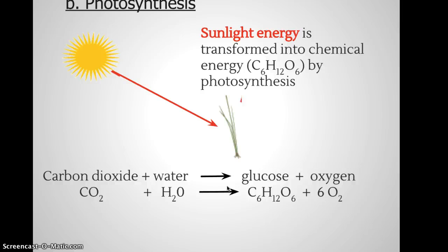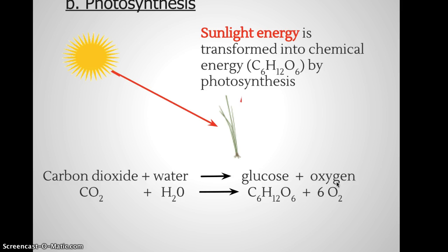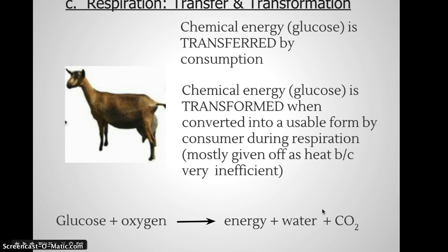One of the major things you need to understand are the major inputs and the transformation occurring during photosynthesis. This should be a review from biology. Sunlight energy, carbon dioxide, and water are used to create glucose and oxygen — an oversimplification, but sufficient for today. What's nice is that respiration uses some of those same products as inputs: glucose and oxygen are used, giving off energy, water, and carbon dioxide. So the outputs of respiration are the same as the inputs of photosynthesis.